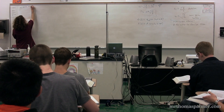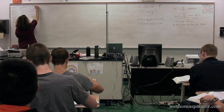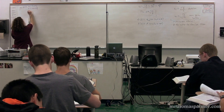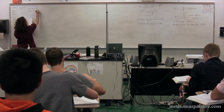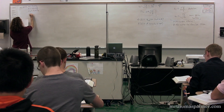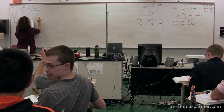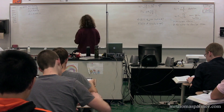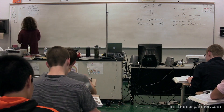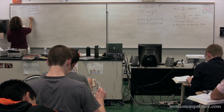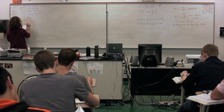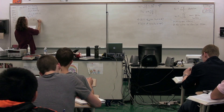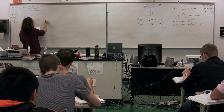An object of mass M1 equals 9.2 kg is in equilibrium while connected to a light spring with constant k equals 100 N/m, fastened to the wall. A second object, M2 equals 7 kg, is slowly pushed up against M1, pressing the spring by the amount A equals 0.2 meters. The system is then released, and both objects move to the right on a frictionless surface. When M1 reaches the equilibrium point, M2 loses contact with M1 and moves to the right with speed V. Determine the value of V.